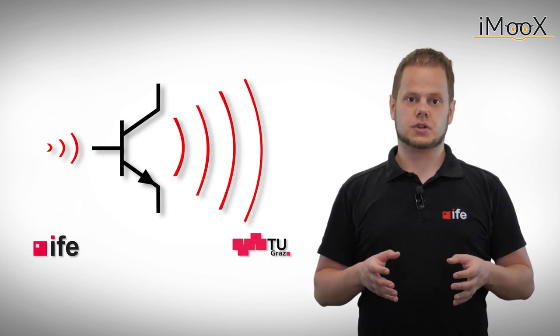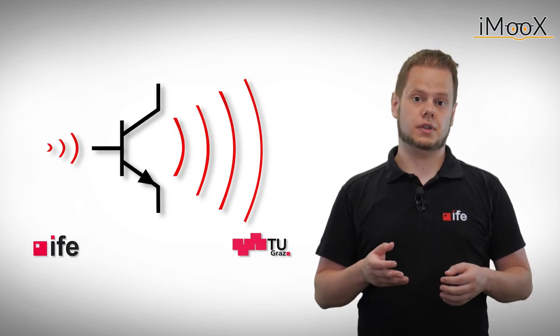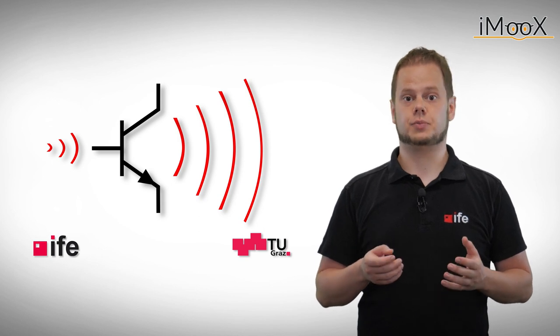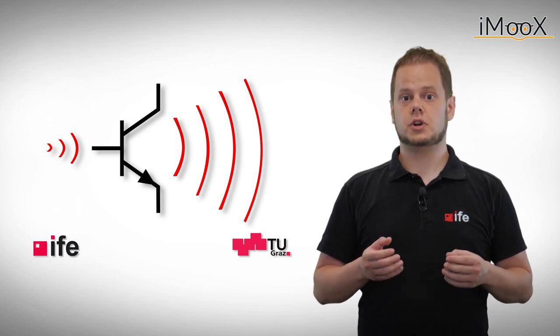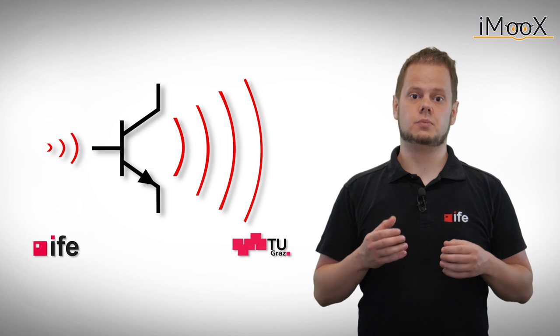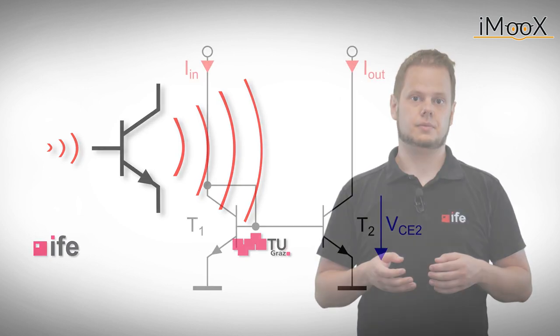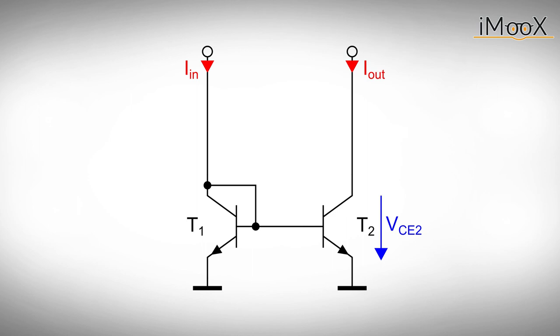Similar to the current source, the current mirror's output current depends on the voltage at the corresponding output. We want to keep the collector emitter voltage constant at the current controlling transistor.